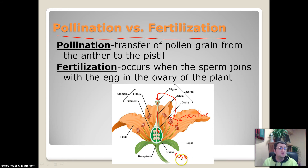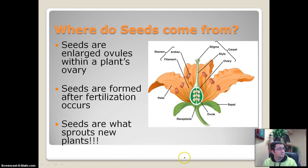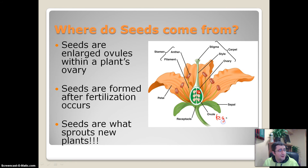Fertilization will produce a seed. That seed can be planted and produce a whole new plant. So where do seeds come from? Seeds are enlarged ovules. Each one of these things right here is an ovule — that's an egg. A seed is an enlarged ovule that occurs after fertilization has occurred.